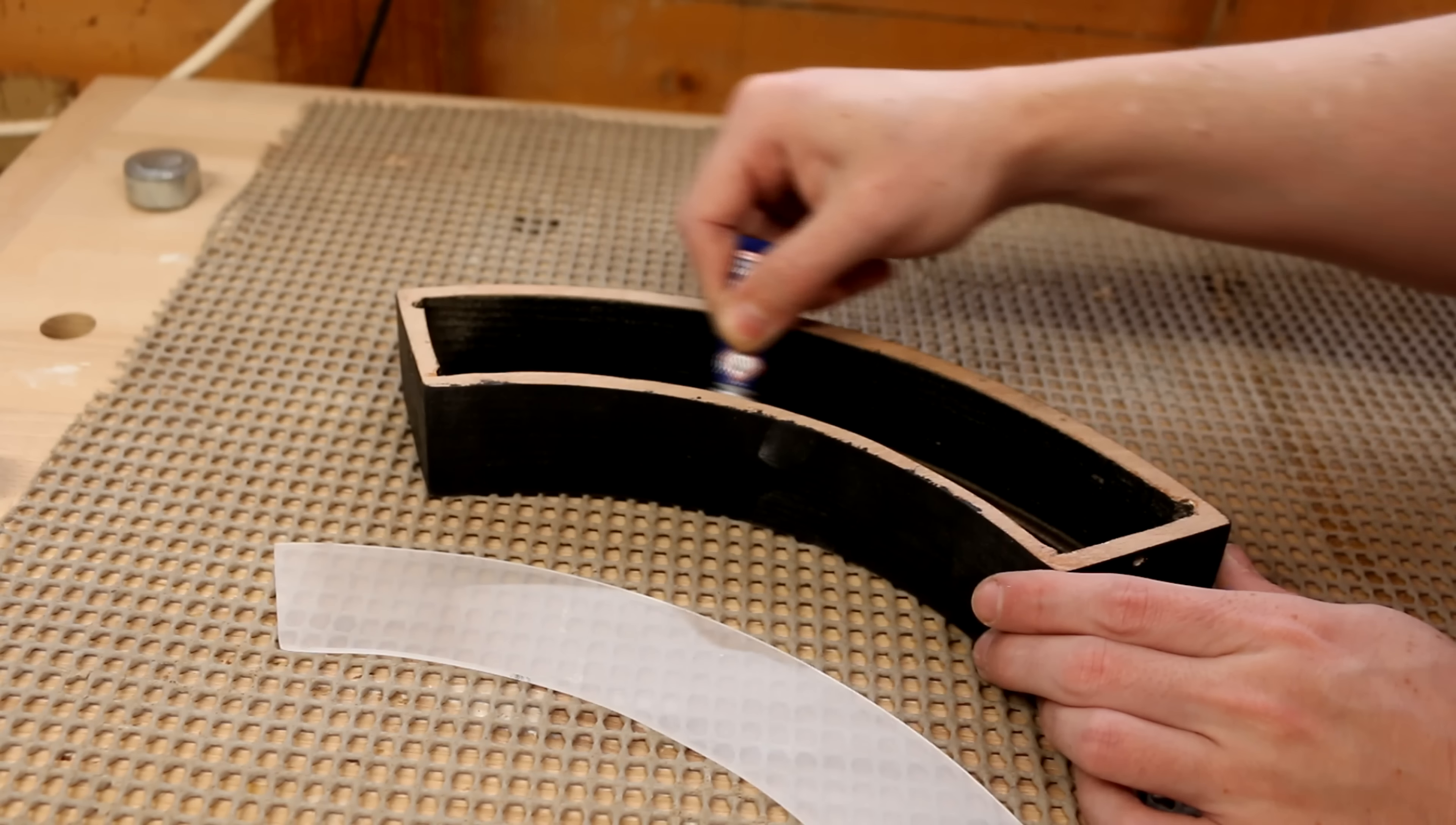The frame gives a flat edge inside that I can now super glue the plastic to. I add a thin bead of glue around the edge and stick the plastic in place.